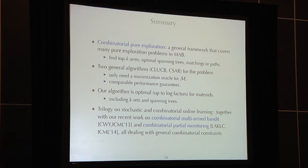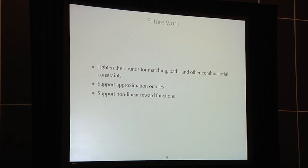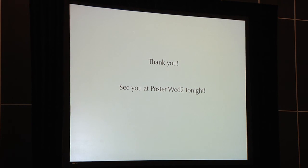To summarize, this paper proposed this general combinatorial pure exploration framework. It covers a number of combinatorial problems, and we provide two algorithms, CLUCB and CSR. The algorithm only needs a maximization oracle, and it has comparable performance guarantees. The algorithm is also optimal up to log factors for matroids. This can be considered as a sequel to our recent work on combinatorial multi-bandit and combinatorial partial monitoring. Together, they all deal with general combinatorial constraints and rely on general maximization oracles. There's some future work for this research problem. One is we still need to tighten the bounds on matching paths and other non-matroid constraints. Also, we are looking to support approximation oracles and non-linear reward functions. That's it. Thank you. Our poster will be at number two tonight.